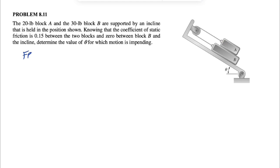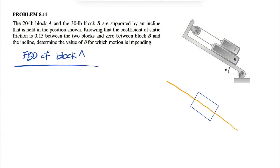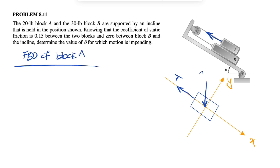Let's start with the free body diagram of block A. We're going to consider our X and Y in this direction — let's call this our X and this our Y. The forces we have are: first, the tension T in the cable attached to A. We have one single cable that goes around the pulley and attaches to block B, so we have the same tension in each. We also have the weight of block A, which is 20 pounds, and the normal force N1 on block A.